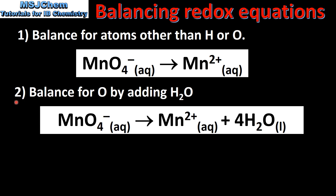The next step is to balance for oxygen by adding H₂O. On the left side of the equation we have 4 oxygen atoms and we balance that by adding 4 H₂O on the right hand side. So we now have 4 oxygens on the right and 4 oxygens on the left.